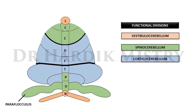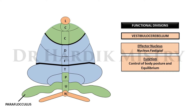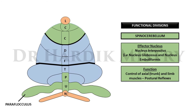The functional divisions of the cerebellum are vestibulocerebellum, spinocerebellum, and corticocerebellum. The vestibulocerebellum is mainly formed by the flocculonodular lobe; its effector nucleus is the fastigial nucleus, and its function is the control of body posture and equilibrium.